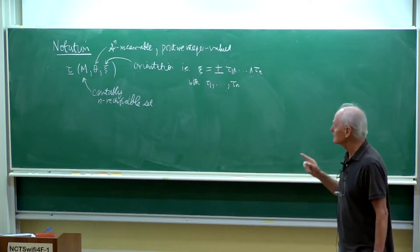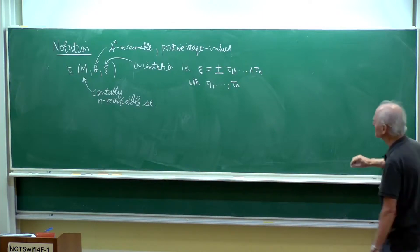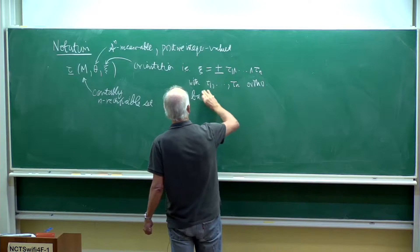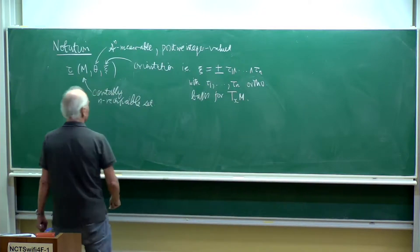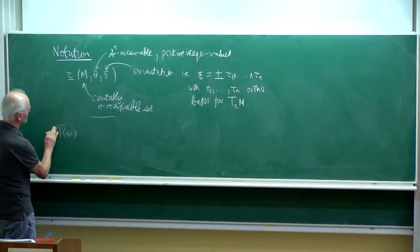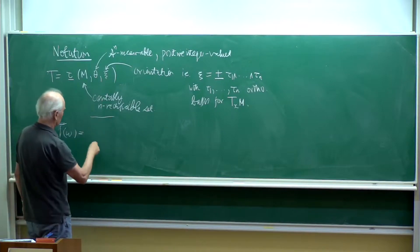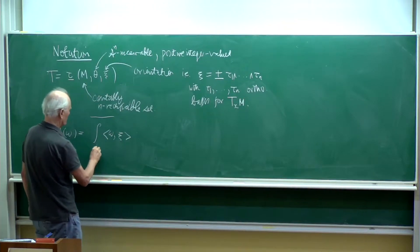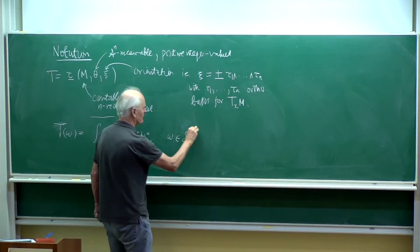Xi is an orientation, meaning it's plus or minus the wedge product of an orthonormal basis for the approximate tangent space. That's the notion of integer multiplicity current. You then define T — if we call this T — as the current obtained by integrating using the dual pairing between omega and this orientation, integrating over M. This has to be well defined for omega in the domain, so it must be measurable.